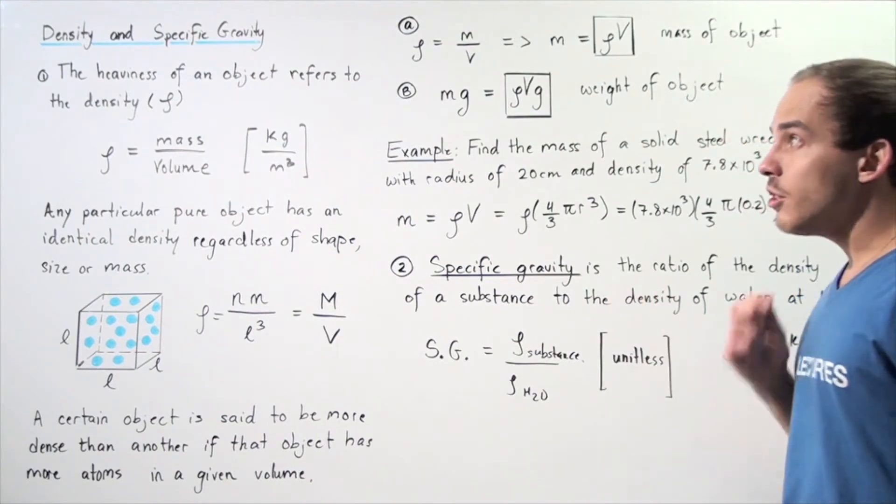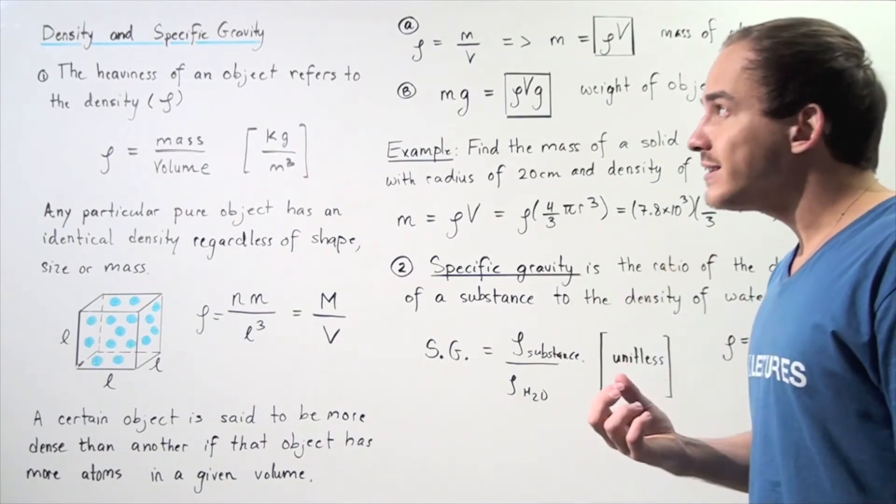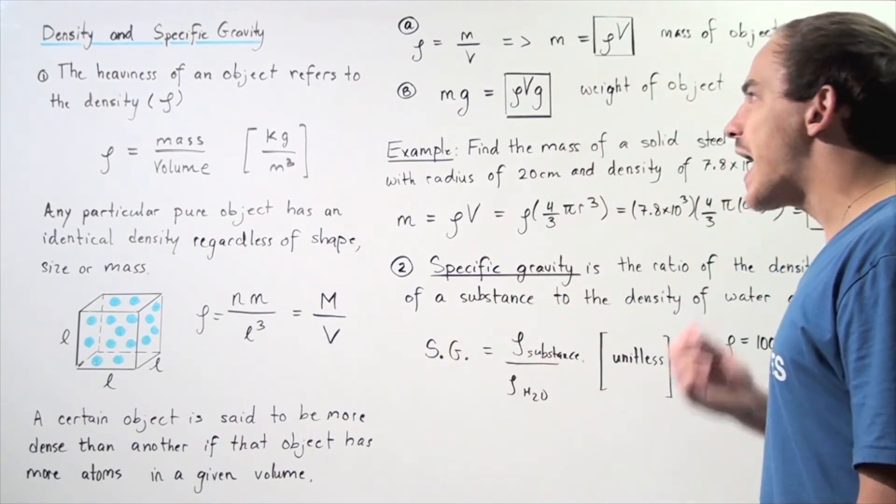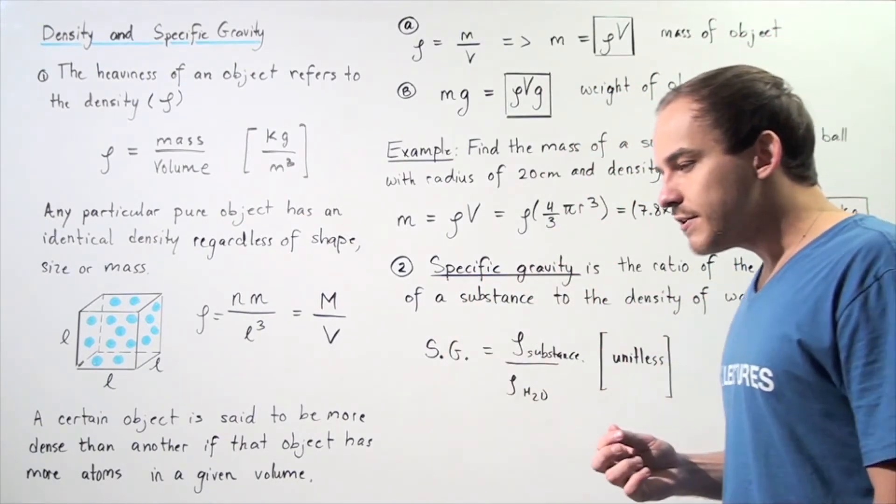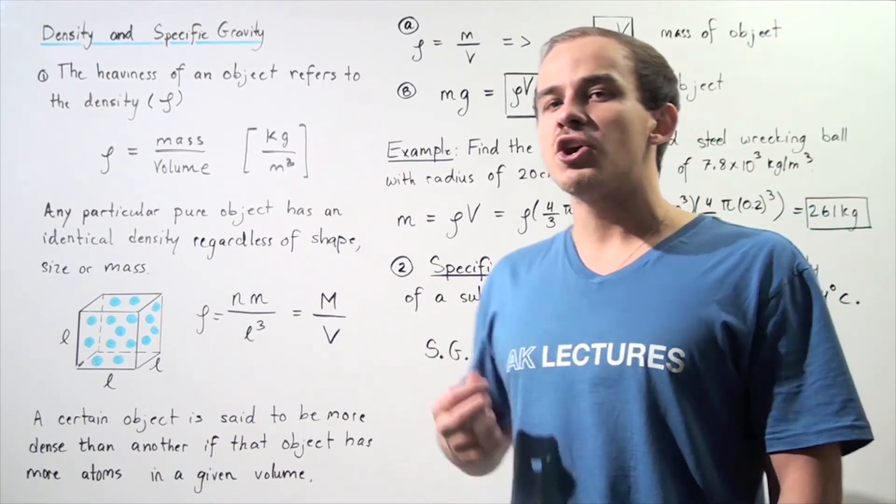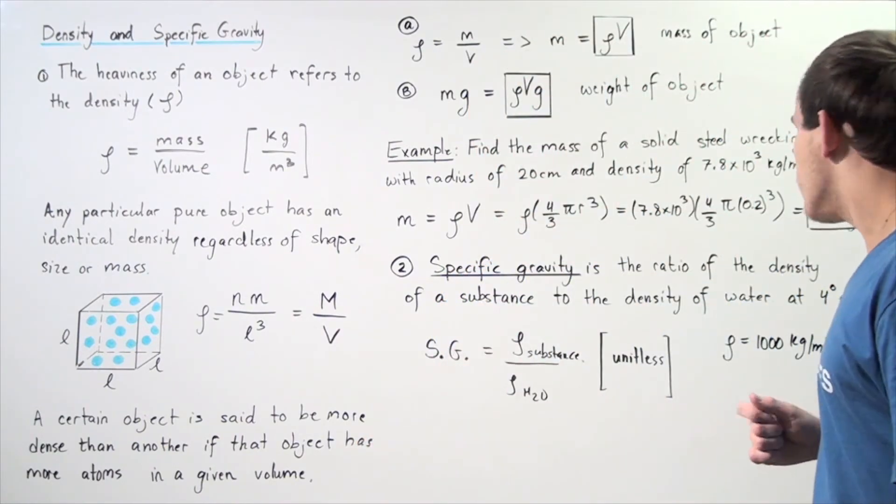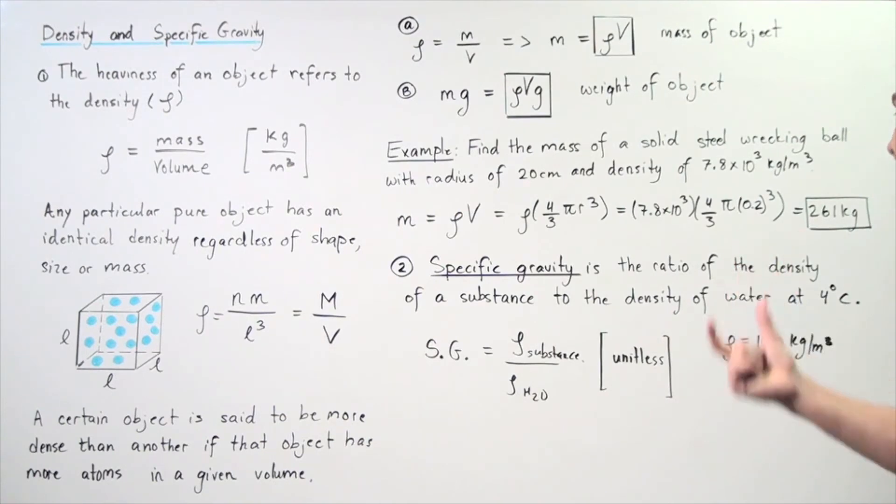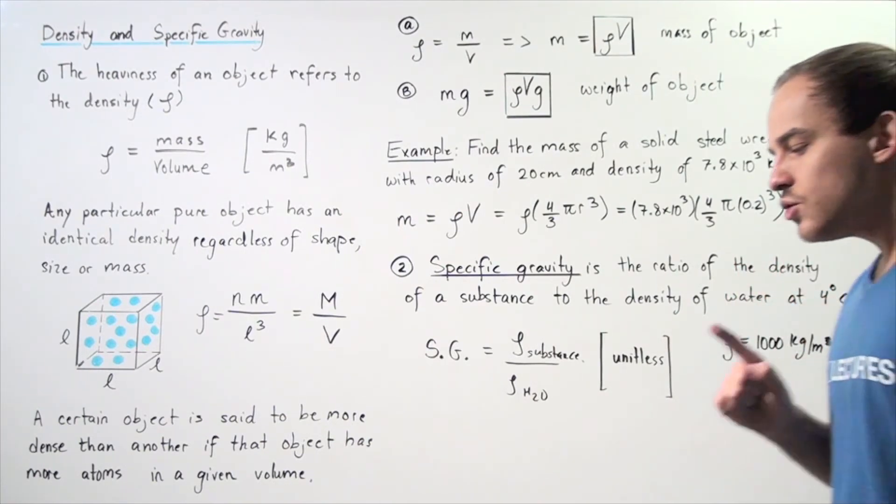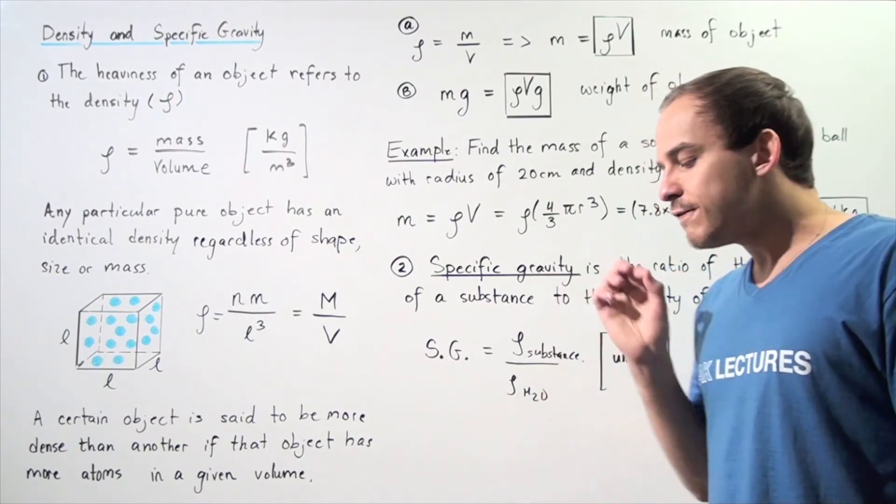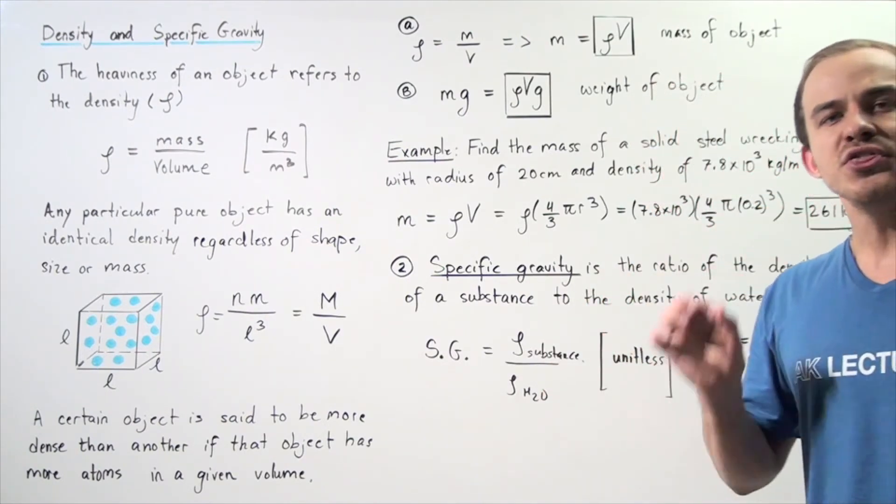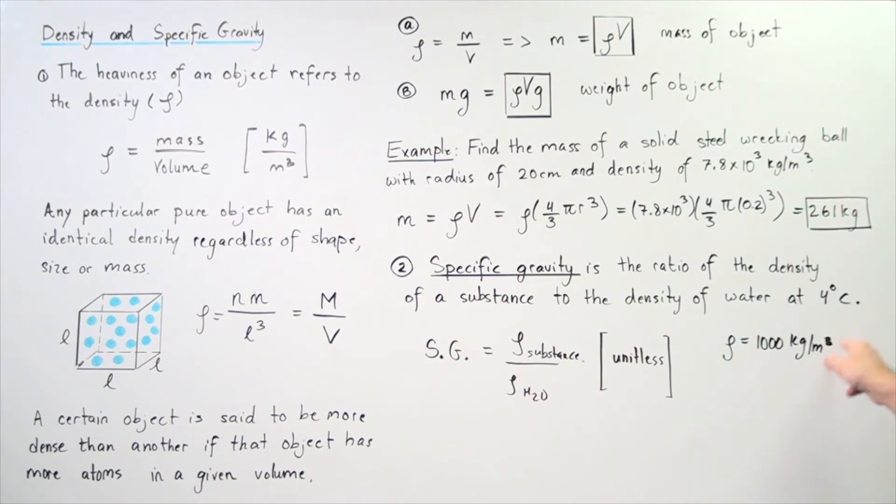Another important quantity is the specific gravity. The specific gravity of an object is the ratio of the density of the substance we're considering to the density of water at 4 degrees Celsius. You should memorize that at 4 degrees Celsius, the density of water is 1,000 kilograms per meter cubed.